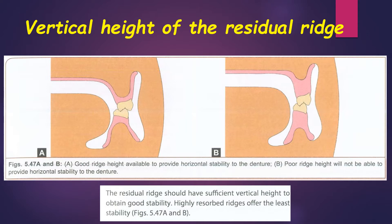Coming to the vertical height of the residual ridge, the residual ridge should have sufficient vertical height to obtain good stability. Highly resorbed ridges offer least stability. In picture A, it shows good ridge height available to provide horizontal stability to the denture. In picture B, poor ridge height will not be able to provide horizontal stability.